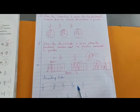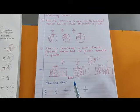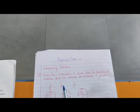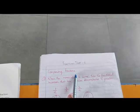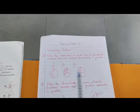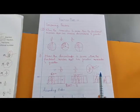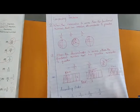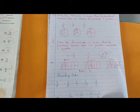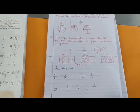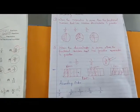Dear students, this is video number 7, that is Part 7. In Part 6 we have learned how to compare fractions, and if your concept is clear about how to compare fractions, you can easily solve these questions. That means you can easily arrange fractional numbers into ascending order and descending order.